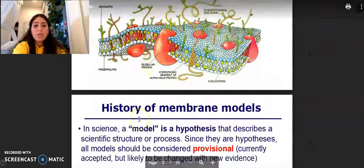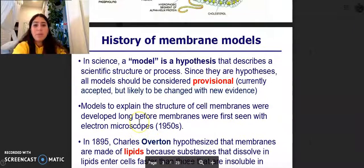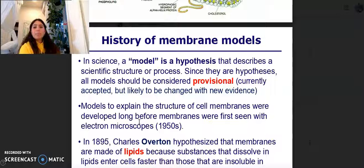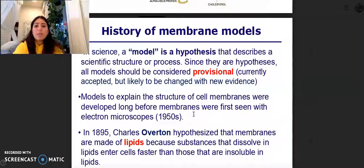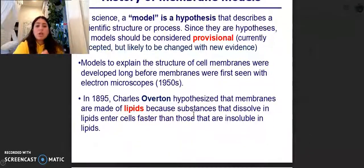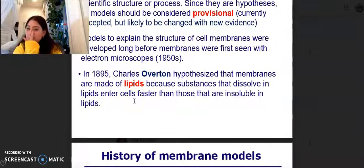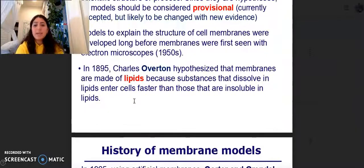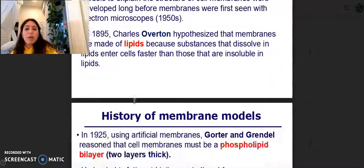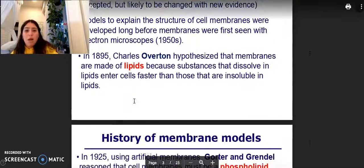The history of the membrane model in science, models and hypothesis that describe a scientific structure or process. Since they are hypotheses, all models should be considered provisional, currently accepted but likely changed with new evidence. Models to explain the structure of cell membranes were developed long before membranes were first seen with electron microscopes in 1950. In 1895, Charles Overton hypothesized that membranes are made of lipids because substances that dissolve in lipids enter the cell faster than those insoluble in lipids.